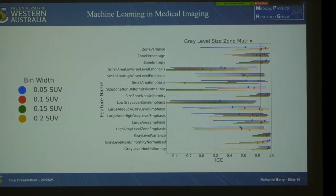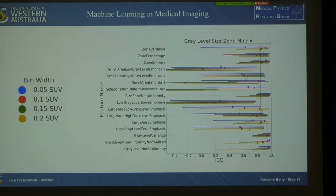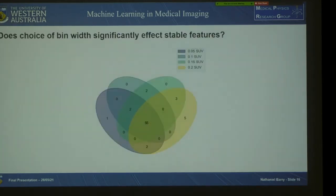In this in-depth analysis of features extracted from the original image across four different bin widths, the x-axis shows ICC values and the y-axis shows features — in this case all textural features from the grey level size zone matrix. Each dot represents a calculated ICC value with its 95% confidence interval, and the dotted line at 0.85 is our stability threshold. A Venn diagram shows that 55 features extracted from the original image were stable regardless of the bin width chosen, with minimal features falling outside this maximal intersection — indicating minimal impact of bin width on feature stability.